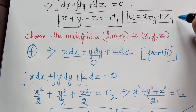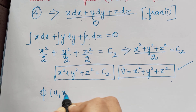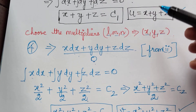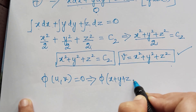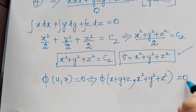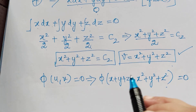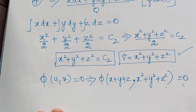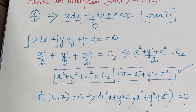We have obtained both solutions U and V. Therefore the general solution φ(U, V) = 0 is φ(x plus y plus z, x² plus y² plus z²) = 0. Some textbooks also write this as equal to C; I am following the convention φ(U, V) = 0 as the general solution.